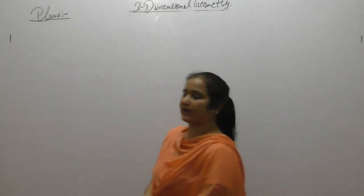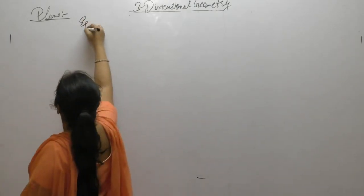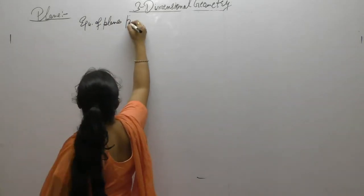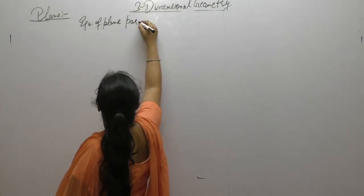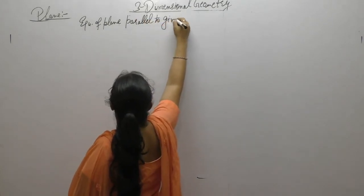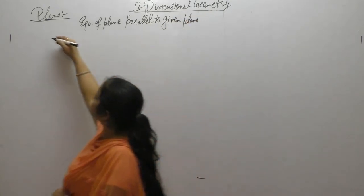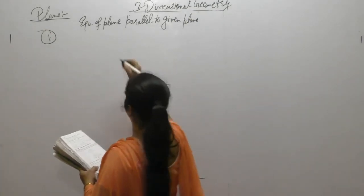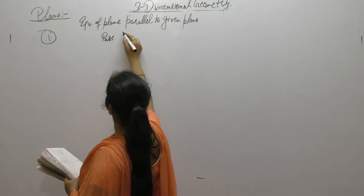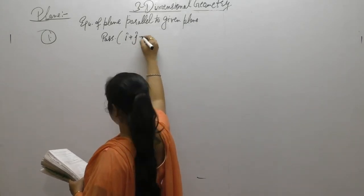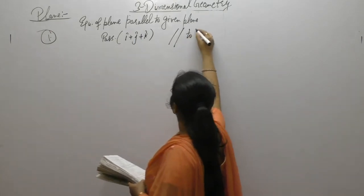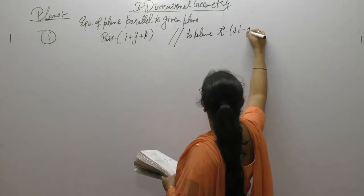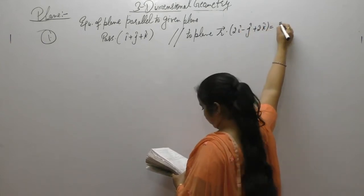The next topic is the equation of a plane parallel to a given plane. For example: find the equation of the plane passing through i plus j plus k and parallel to the plane r dot (2i minus j plus 2k) equals 5.